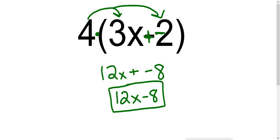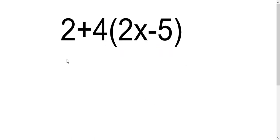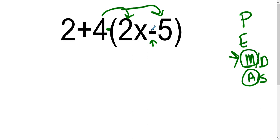In this example it's very tempting to want to add the 2 plus 4 first. However, remember that this is a multiplication, and if you think about your order of operations or PEMDAS, multiplication has to come before addition. So we have to distribute this 4 to both the 2x and the 5. I have a subtraction here, which means I need to do a stay change change — the 2x stays, the subtraction changes, and the 5 becomes a negative. Very important to remember that this is a negative 5.